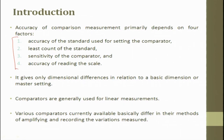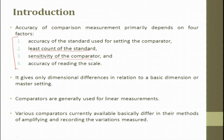When measurement is linear we can control it, but when it is at an angle it is very difficult. The least count of the standard is important for comparison. The sensitivity of the comparator is also key — sensitivity means how sensitive you are; for example, what is the smallest change you can measure and how quickly can you measure it — these two are very important aspects of sensitivity. Then accuracy of reading on the scale are all very important factors to consider for a comparator.